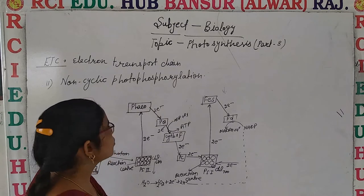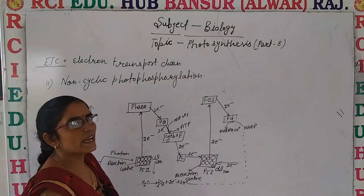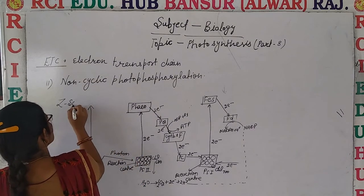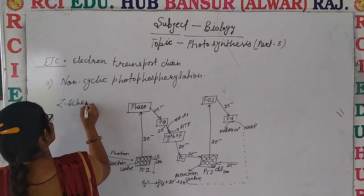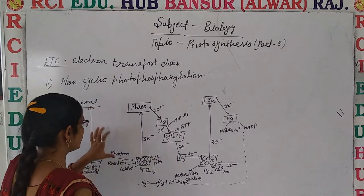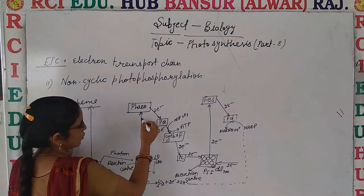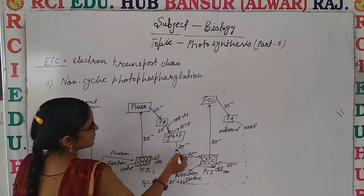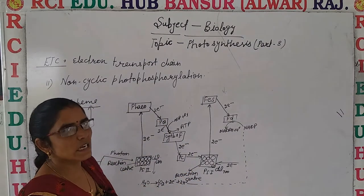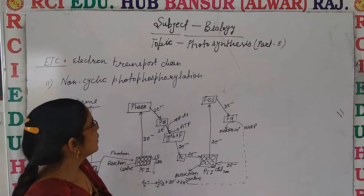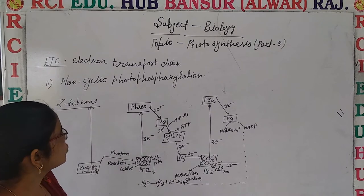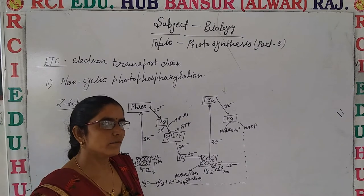Is that clear? Non-cyclic photophosphorylation is also known as the Z scheme, because as shown in the diagram before you, the pathway is represented in a Z form. So it is known as the Z scheme. Let's now discuss non-cyclic photophosphorylation in detail.